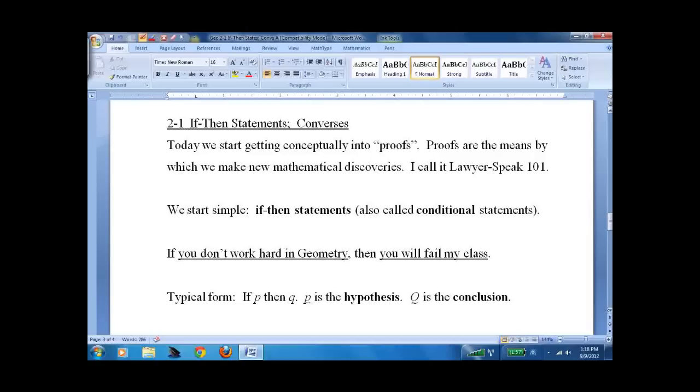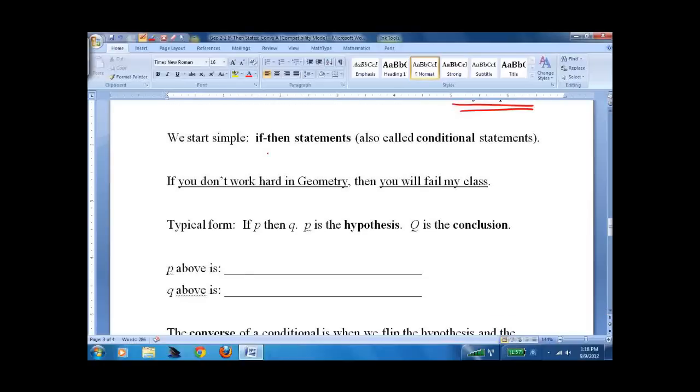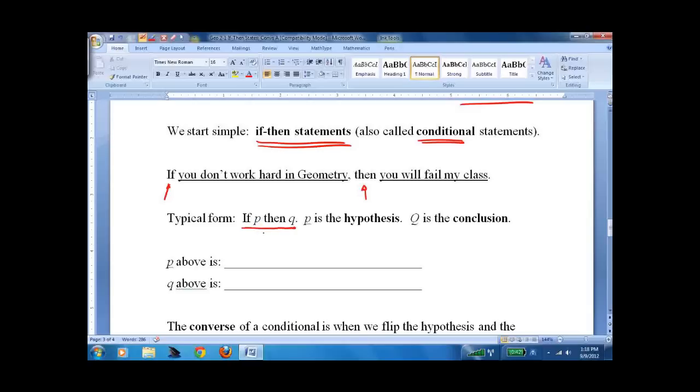We're going to start with some of the logic that goes into proofs. I call it lawyer speak 101 because it's really ticky-tacky, but that's geometry - we have to be very careful. An if-then statement, also called a conditional, looks like this: if you don't work hard in geometry, then you will fail my class. It's got the if-then, and that's the typical form: if p then q. We'll call p the hypothesis. The hypothesis up here is just this part - you don't work hard in geometry.